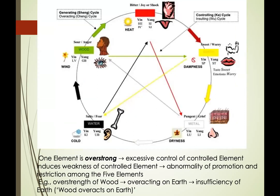When one element is overly strong, there is excessive control over the controlled element, inducing weakness in it and causing abnormality in promotion and restriction among the five elements. For example, over-strength of wood — corresponding to the liver and gallbladder — causes it to over-act on earth, resulting in insufficiency of the earth element.